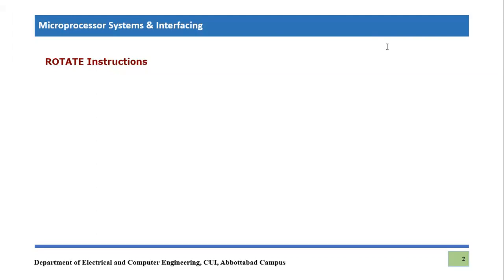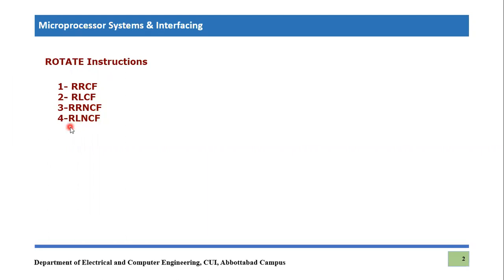Rotate instructions. In PIC18F microcontrollers, we have four types of rotate instructions. These are the four instructions under the umbrella of rotate instructions: number one is RRCF, number two is RLCF, number three is RRNCF, and number four is RLNCF.